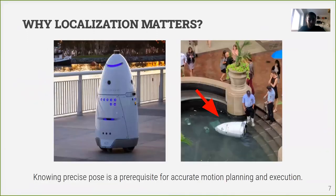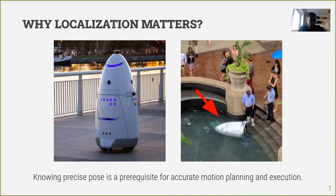Why does localization matter? Because knowing the precise position in space is the first step to any motion planning and execution. If we don't know where we are, we cannot plan or move. A real-world example is a patrolling robot that was patrolling the area around a mall and eventually fell into a pool because its localization failed — the robot simply didn't know where it was.